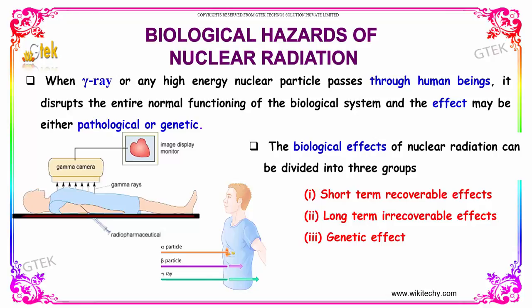The biological effect of nuclear radiation can be divided into three groups: the short-term recoverable effects, the long-term irrecoverable effects, and finally the genetic effect.